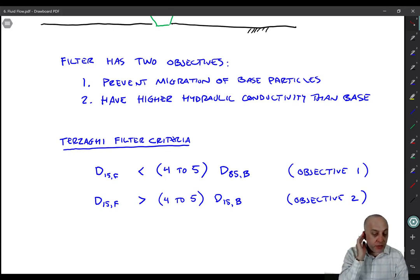So based on those two objectives, Carl Terzaghi, the founder of Soil Mechanics, was the first to develop these filter criteria. So first, the D15 size of the filter has to be less than 4 to 5 times the D85 size of the base.